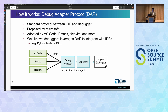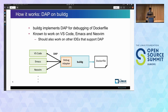Well-known debuggers using DAP to integrate with IDEs include Python, Node.js, and C#. BuildG implements DAP for integrating with IDEs, so users can debug Dockerfiles using the rich GUI provided by IDEs. Currently, BuildG is known to work on VS Code, Emacs, and NeoVim, but it should work on other IDEs that support DAP. BuildG talks with IDEs via DAP and translates DAP operations into BuildG debug operations. Note that you still need to install BuildG on your host to use this feature.